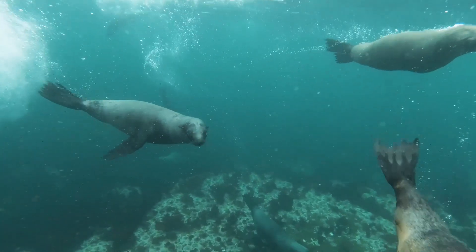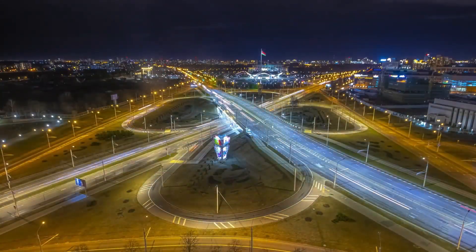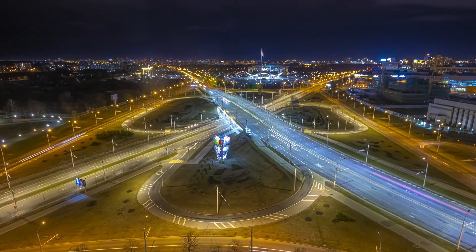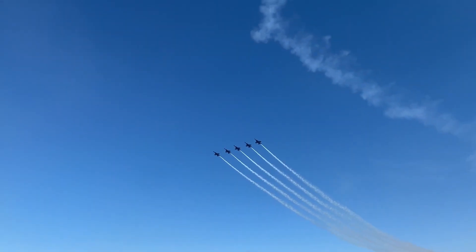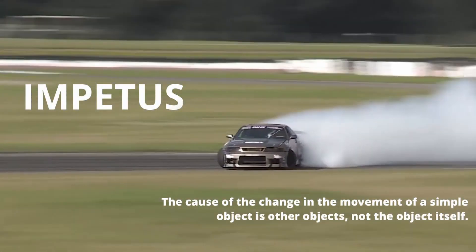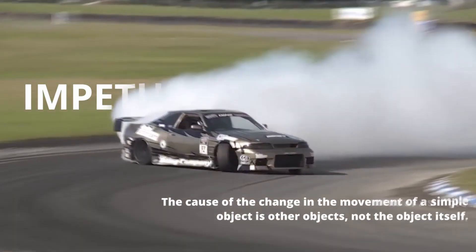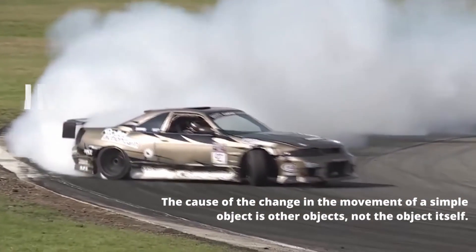The ancient Greeks understood that the cause of the change in a movement conforms to the principle of impetus. Sir Isaac Newton, almost 2,000 years later, expressed it in terms of mathematical equations. The principle of impetus is simply this: that the cause of the change in the movement of a simple object is other objects, not the object itself.